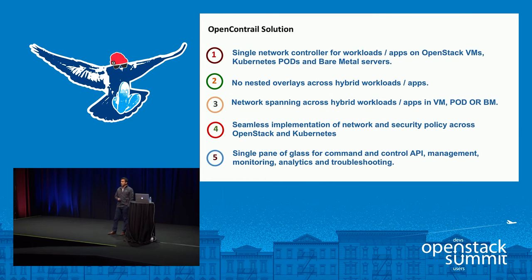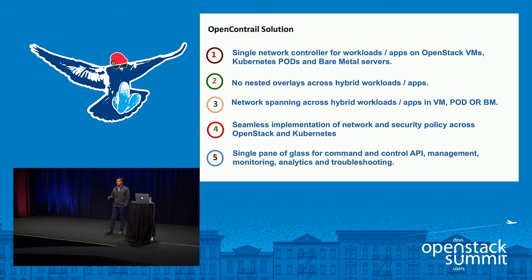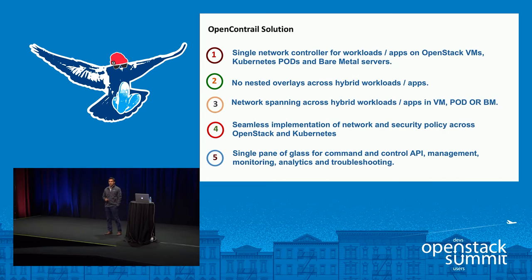To this end, the Contrail solution provides a single network controller for your hybrid workloads. Whether you have OpenStack VMs running or a Kubernetes cluster in your OpenStack environment, the pods in that environment as well as bare metal servers connected to this environment can all talk to each other with a single network controller — the OpenContrail controller.